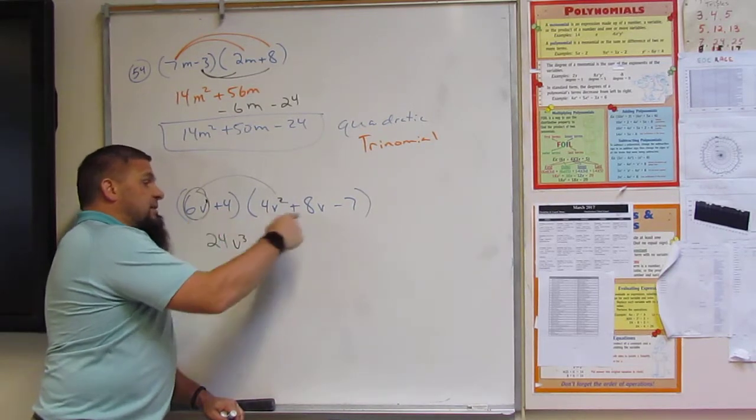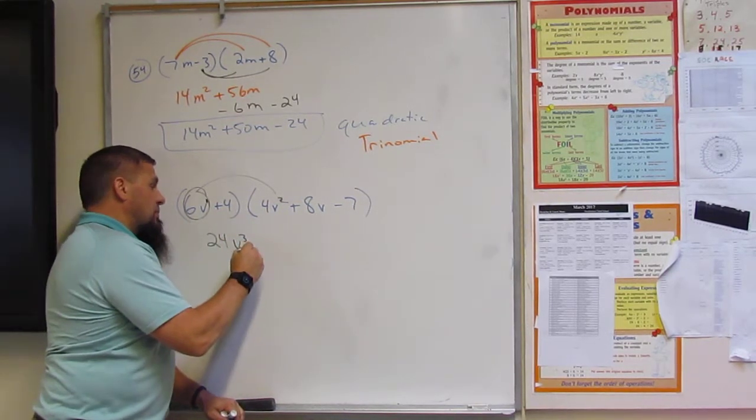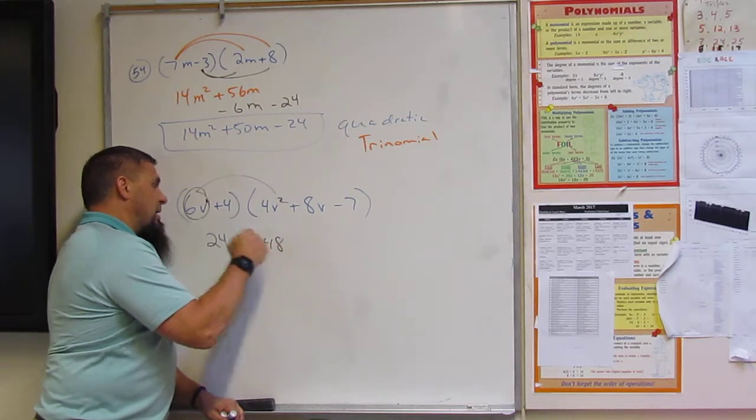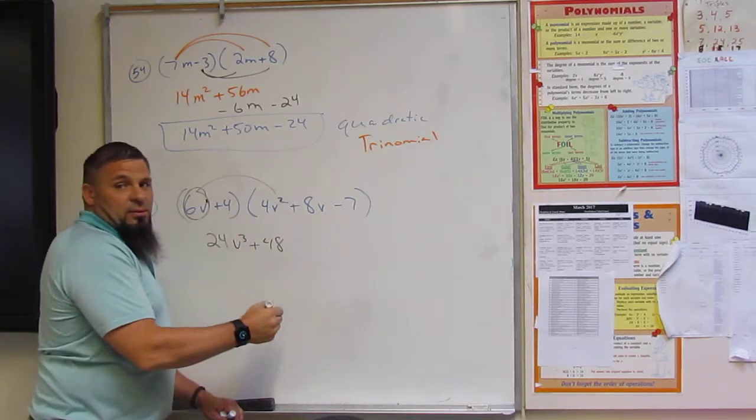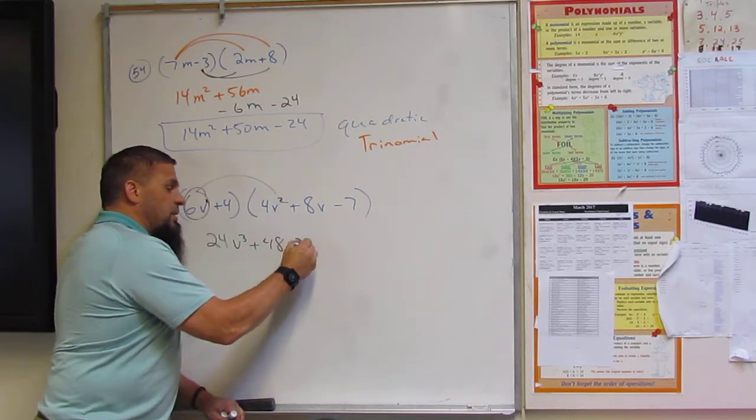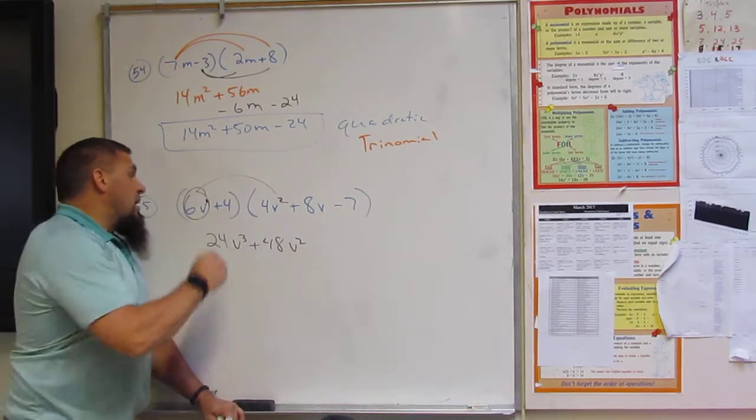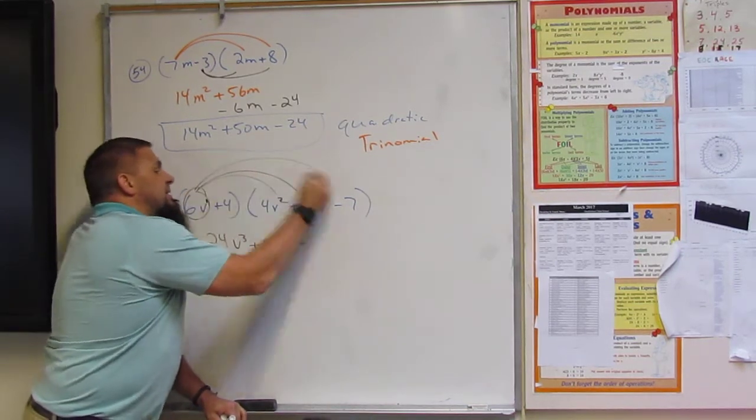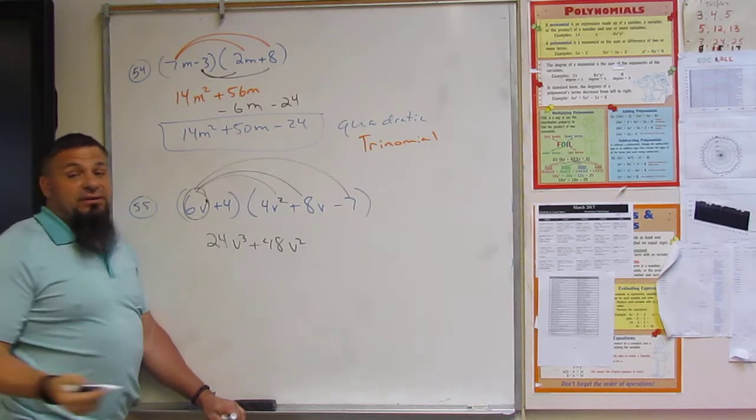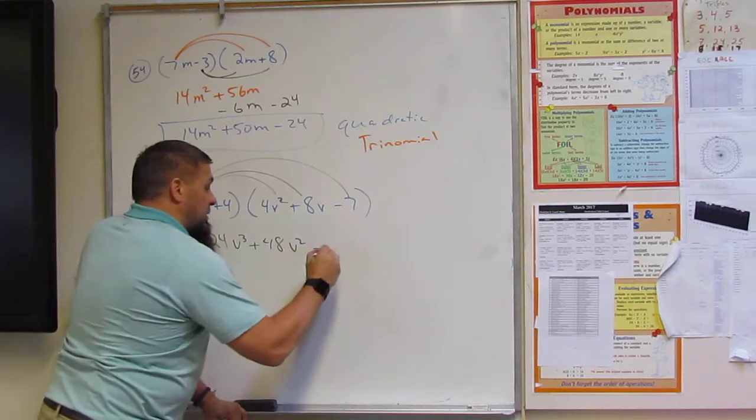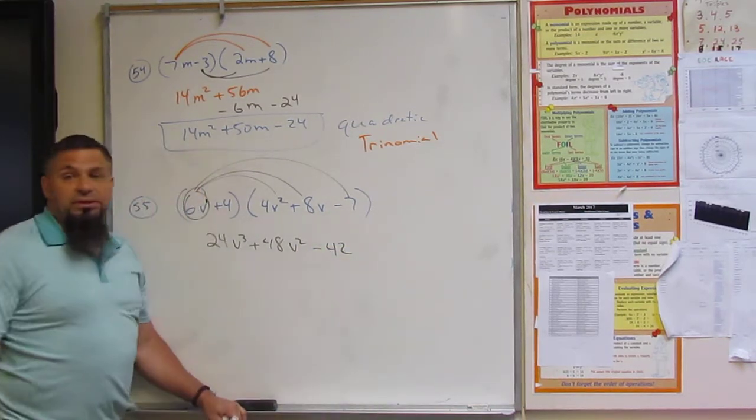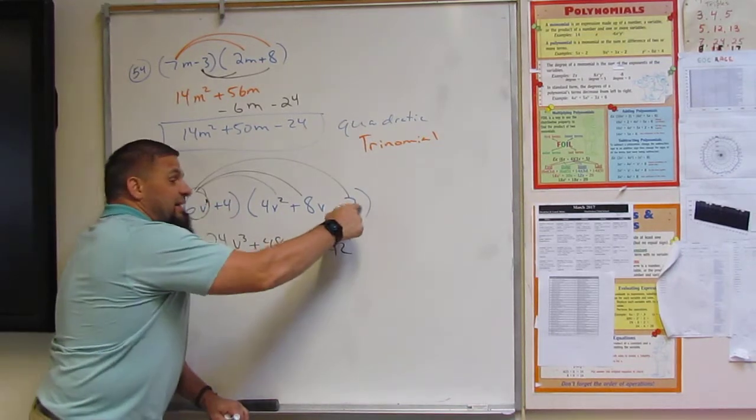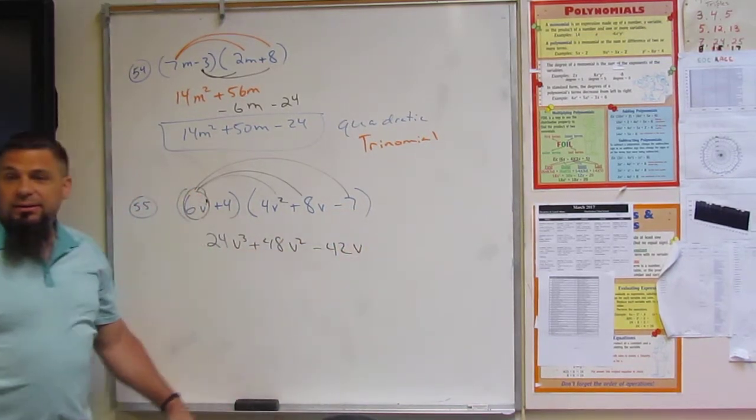So what's 6 times 8? 48. V times V? No. V². Yeah. 1 plus 1 is 2, right? And then so then we got 6 times 7, or negative 7. 6 times negative 7. Negative 42. And 1 plus none is 1, right?